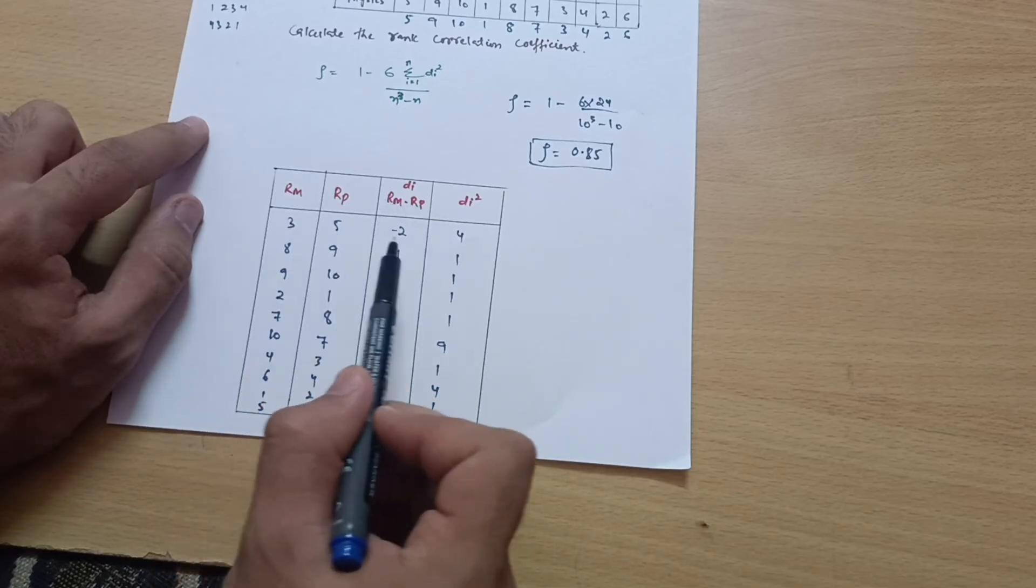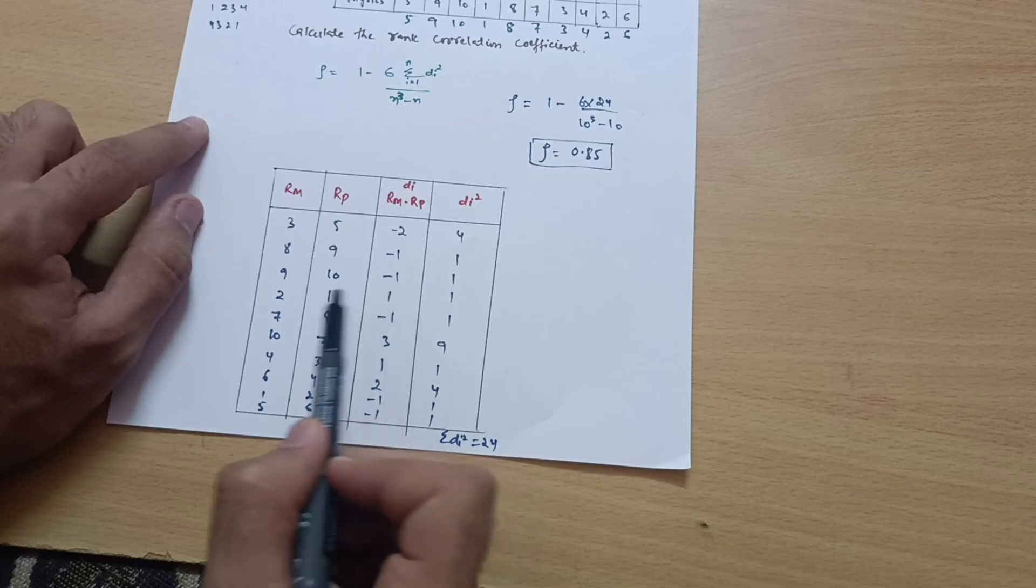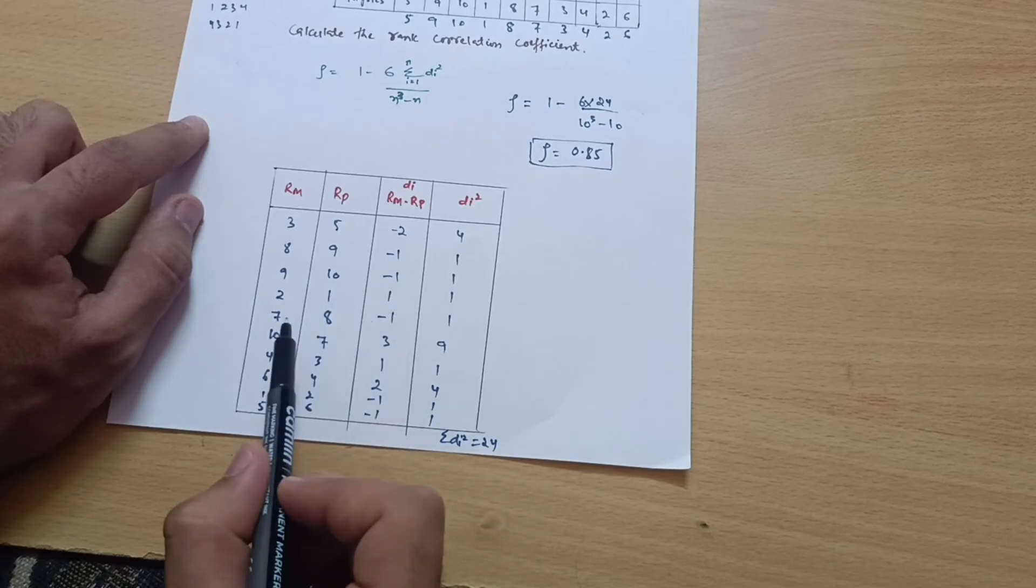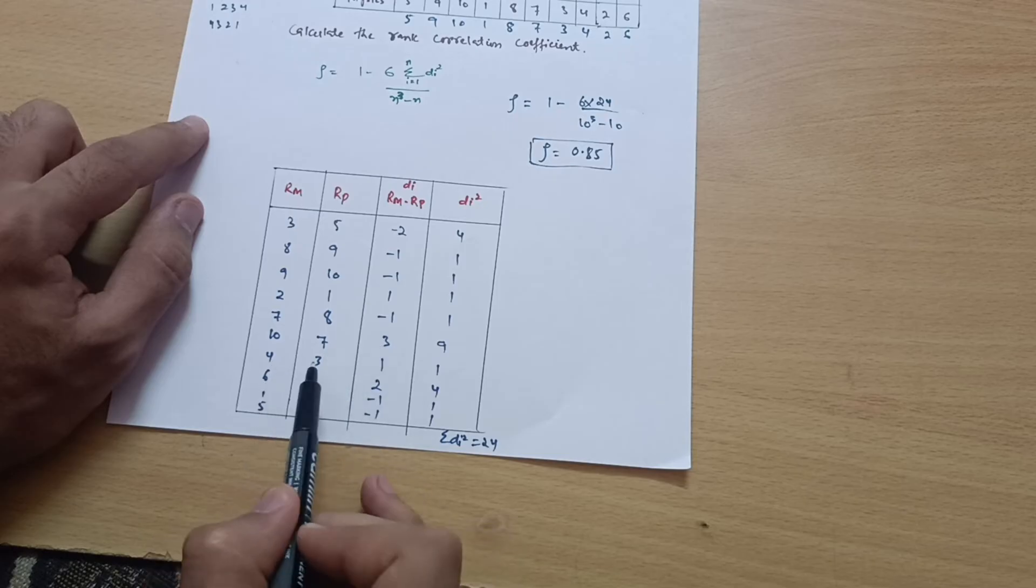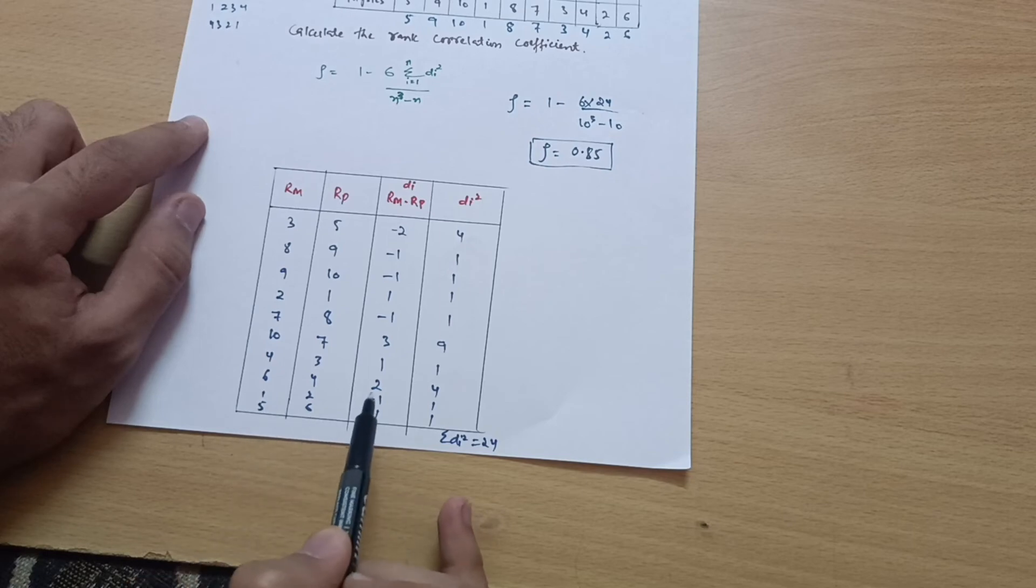Rm minus Rp: 3 minus 5 is minus 2, 8 minus 9 is minus 1, 9 minus 10 is minus 1, 2 minus 1 is 1, 7 minus 8 is minus 1, 10 minus 7 is 3, 1 minus 3 is minus 2, 4 minus 4 is 0, 6 minus 2 is 4, 5 minus 6 is minus 1.